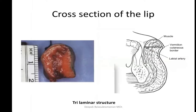In cross section, the lip is a trilaminar structure: the mucosal surface on the inside, then the labial artery, then the orbicularis muscle, then the skin with subcutaneous tissue. You must always remember the position of the labial artery — on the inner mucosal aspect, not the outer aspect — because this helps when planning lip switches or lip advancements.